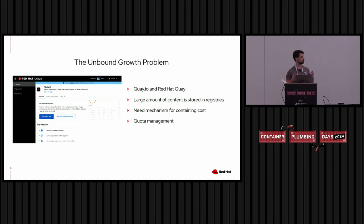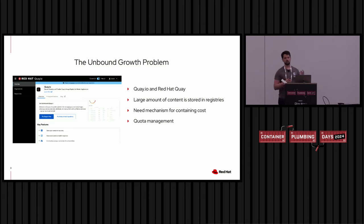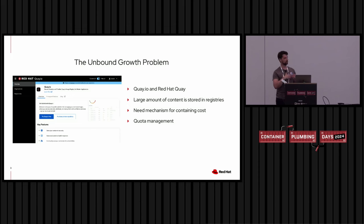Quay, like other container registries, has a problem where content is continually being pushed to it via users, automation, and multiple sources. Eventually that content goes stale, unusable, unnecessary — but it still stays in storage and drives up storage costs. So we need some mechanism to control those costs. The most intuitive approach is quota management. About two years ago, we implemented a way for Quay to calculate the sizes of namespaces and repositories, and Quay administrators could set warnings when users were approaching a limit, and blocks when that limit was reached.